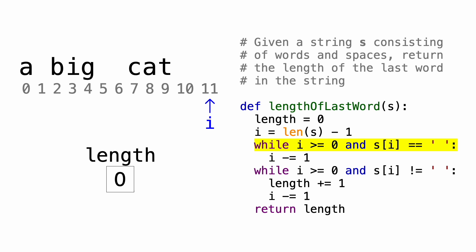Right now, the character at index 11 is a space, so we'll decrement i and move backwards in the string. Then we check again. The character at index 10 is still a space, so let's decrement i again.